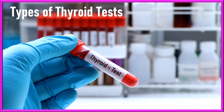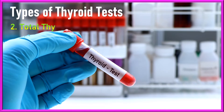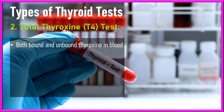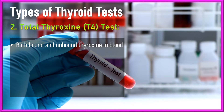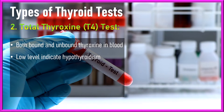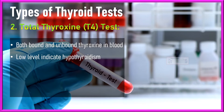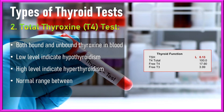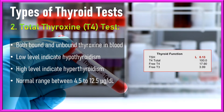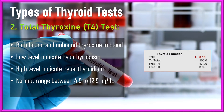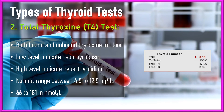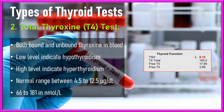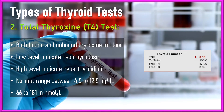Number two, the total thyroxine test, or T4 test. This test measures both the bound and unbound forms of thyroxine in the blood. Low total T4 levels are indicative of hypothyroidism, while high levels may point to hyperthyroidism. The normal range for total T4 is approximately 4.5 to 12.5 micrograms per deciliter, or 66 to 181 nanomoles per liter, depending on the unit used by the lab.